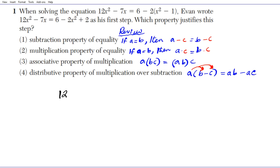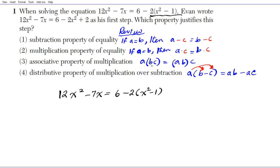With those four properties in mind, let's look at which one applies to Evan's solution. He started with 12x squared minus 7x equals 6 minus 2 times (x squared minus 1) and ended up with the expanded form. The key difference is that the parentheses are gone. Of the properties involving parentheses, the distributive property removes them — the factor outside is distributed across the difference inside.